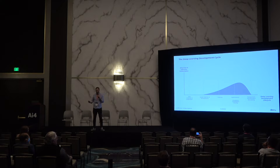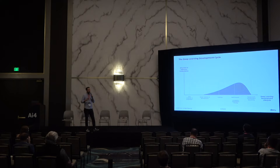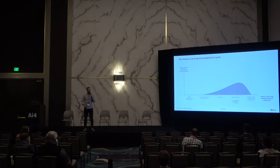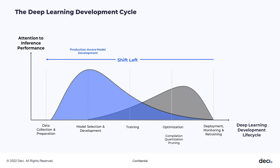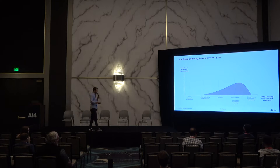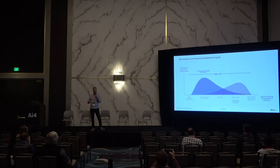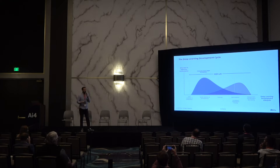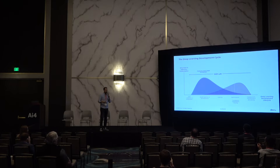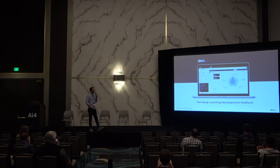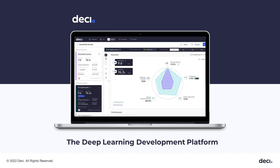This is not the case in most deep learning development approaches today. Usually model selection is done to solve only one problem — getting the highest accuracy on the data. Then after training, people start giving attention to inference performance and model size, which brings them back to redesign the model. What we support is a production-aware development approach, where model selection takes all performance considerations early in the development cycle, avoiding those narrow iterations and late-stage redesigns.